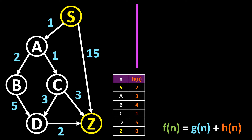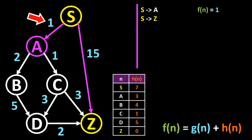We will now take a practical look at how A-Star works. We start at the start node S. Our goal is to find the shortest path from S to Z, meaning the value of F of N should be as small as possible. From S we can reach A and Z. We first calculate F of N for the path from S to A. We take the costs on the path — in this case 1 — and add the estimated costs from A to the destination, which we can see in the table here. In this case the value is 3, giving a result of 4, which we note down in front of the path.